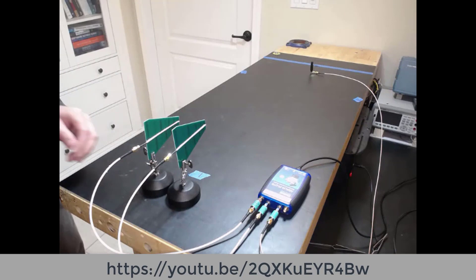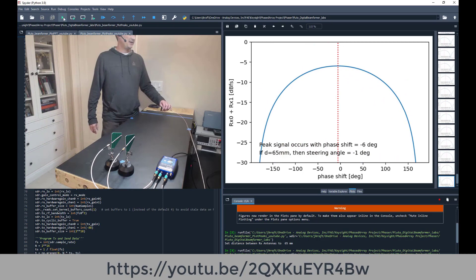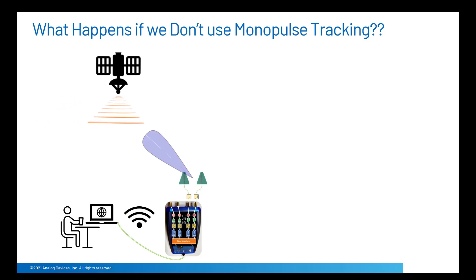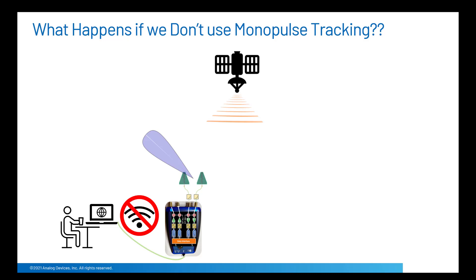We ended last week's video by plotting the antenna pattern and finding its peak, which corresponded to the direction of arrival of the RF signal. So if we know the direction of arrival, why isn't that good enough? Why do we need an adaptive tracking algorithm? Imagine we use our Pluto digital beamformer to receive an internet data stream from a satellite. We scan, find the RF signal, calculate the direction of arrival, and program that phase delay in. But if it's a low Earth orbit satellite, it moves around pretty fast.